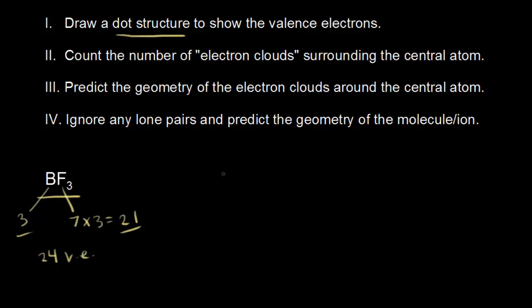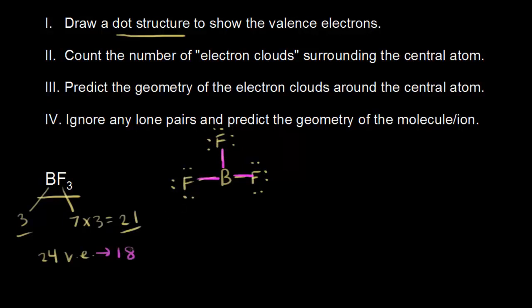Boron is less electronegative than fluorine, so boron goes in the center, bonded to three fluorine atoms. That represents six valence electrons — two, four, six. So 24 minus six gives me 18 valence electrons left. We put those leftover electrons on the terminal atoms, which are our fluorines. Fluorine follows the octet rule, so each fluorine needs six more electrons to have an octet. Six times three is 18, so we've now represented all 24 valence electrons in our dot structure.